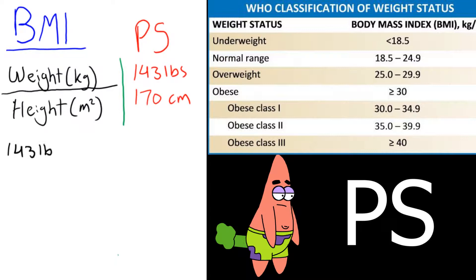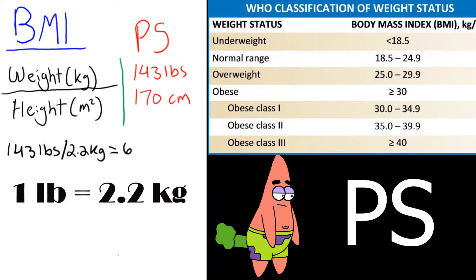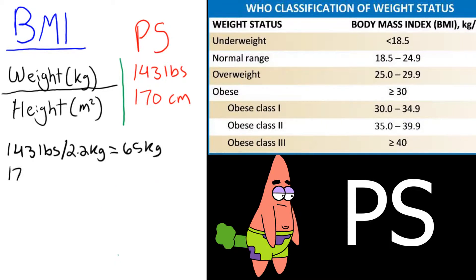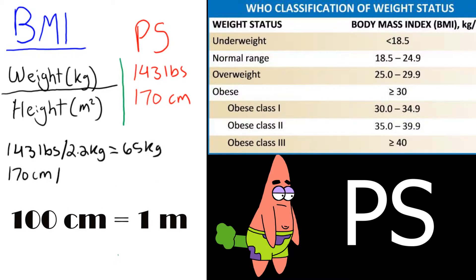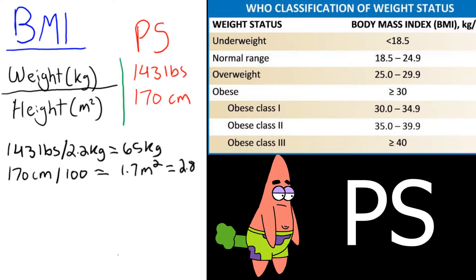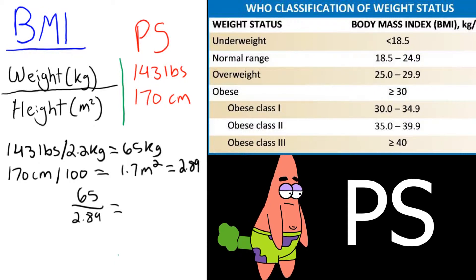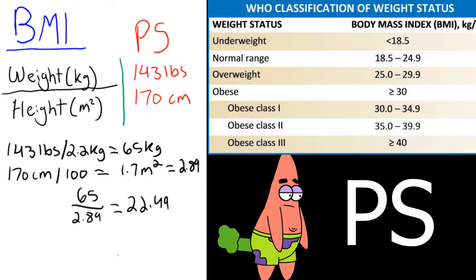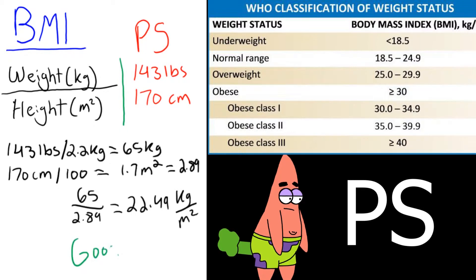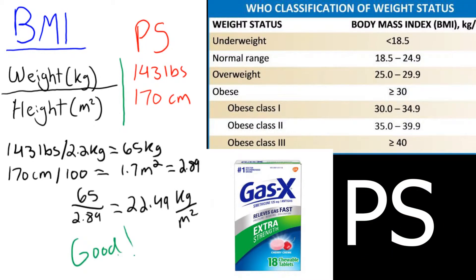So we divide the 143 pounds by 2.2 to get 65 kilograms, and the 170 centimeters by 100 to get 1.7 meters. Then we square the 1.7 meters to get 2.89. Now that we have the right units, we divide our 65 kilograms by 2.89 to get 22.49 kilograms per meter squared. And according to the chart, PS is within a normal healthy range and might just be going home with some Gas-X for now.